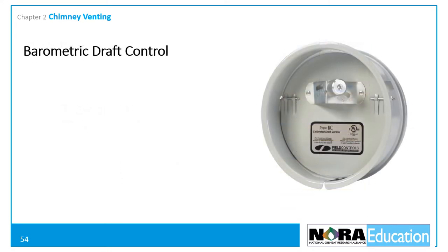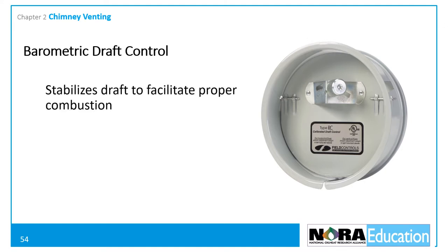This next section covers barometric draft controls, also known as draft regulators. Oil heat systems require a steady draft. Once the appliance reaches steady-state efficiency, the draft over the fire must remain constant to allow for proper combustion and efficiency. Since natural draft varies depending on several factors including atmospheric pressure, temperature, and wind, barometric draft controls are needed to stabilize draft for most oil-fired appliances.